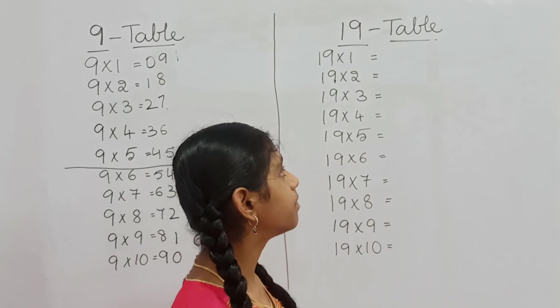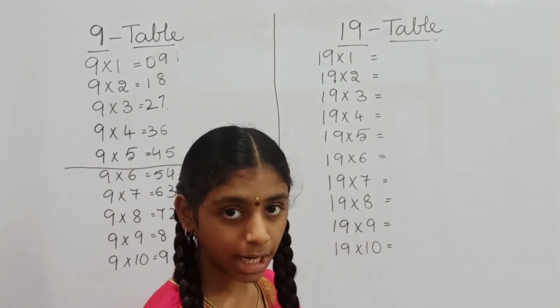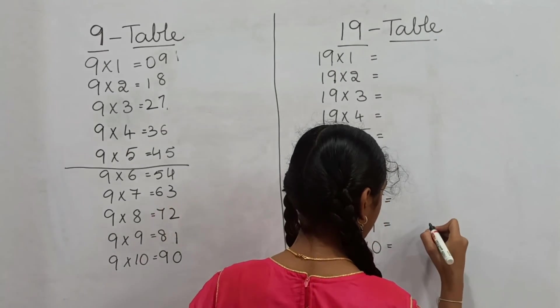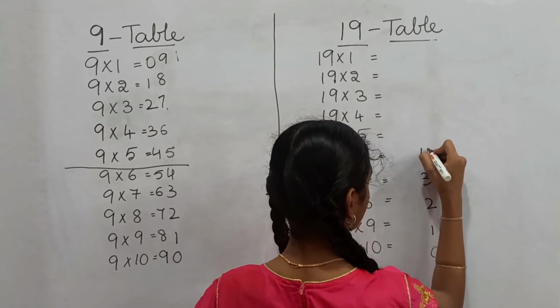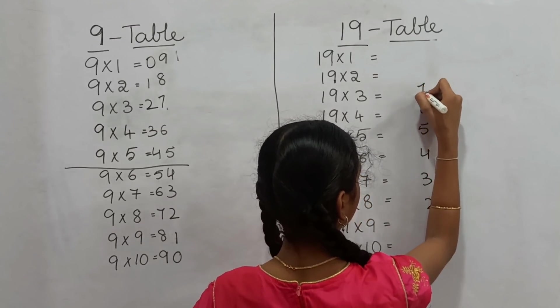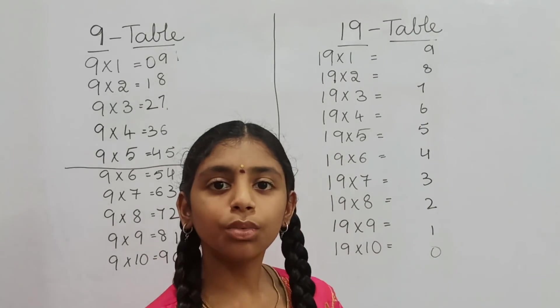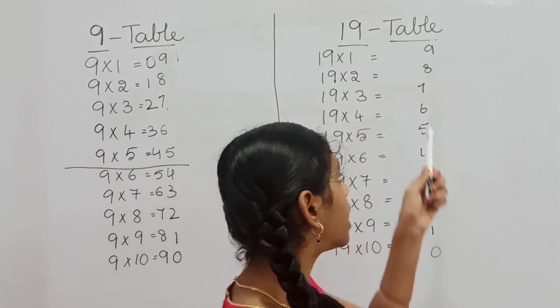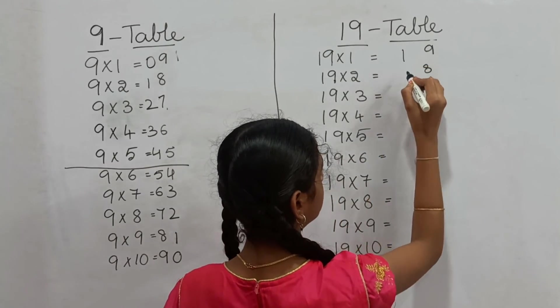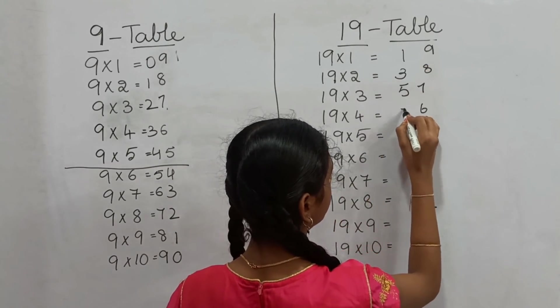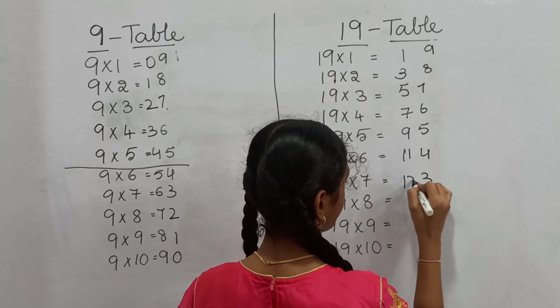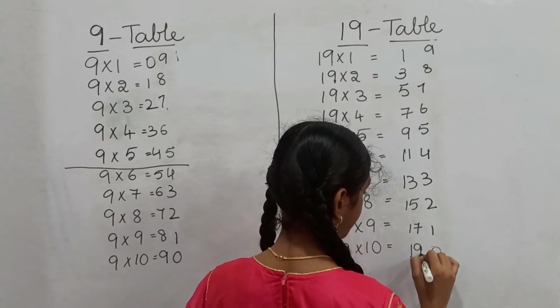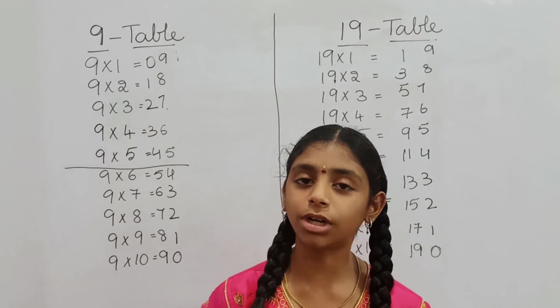Now, let's go to 19 table. Here, I want to write 0 to 9 from bottom to top. We know all numbers start from 1. I want to write all numbers here: 1, 3, 4, 5, 6, 7, 8, 9, 10. Our 19 table is also completed.